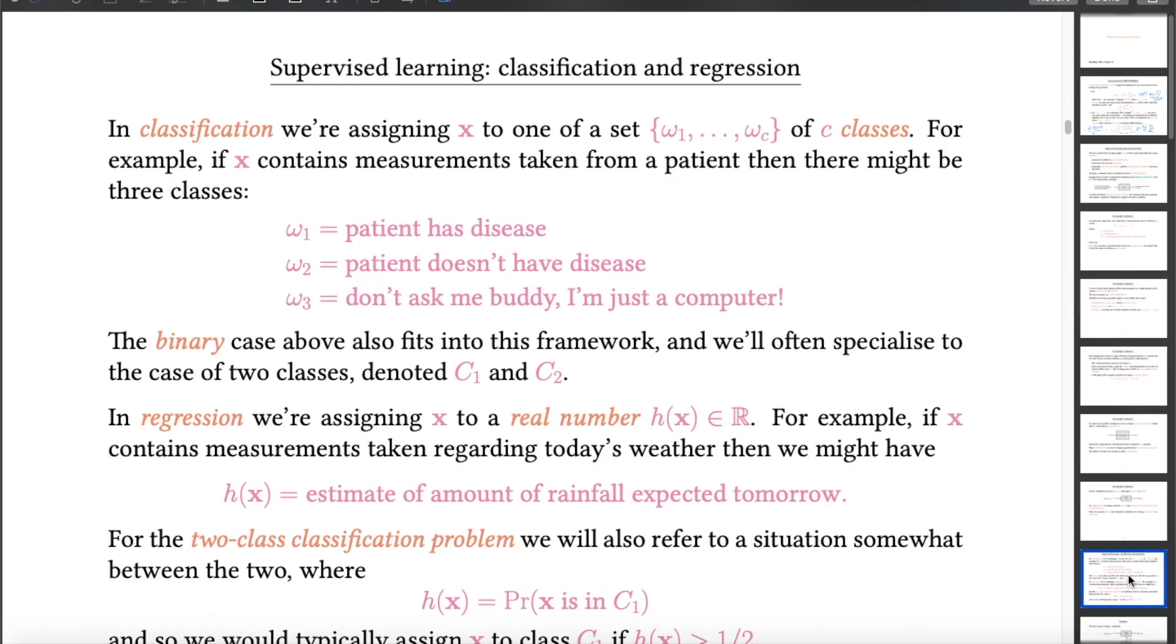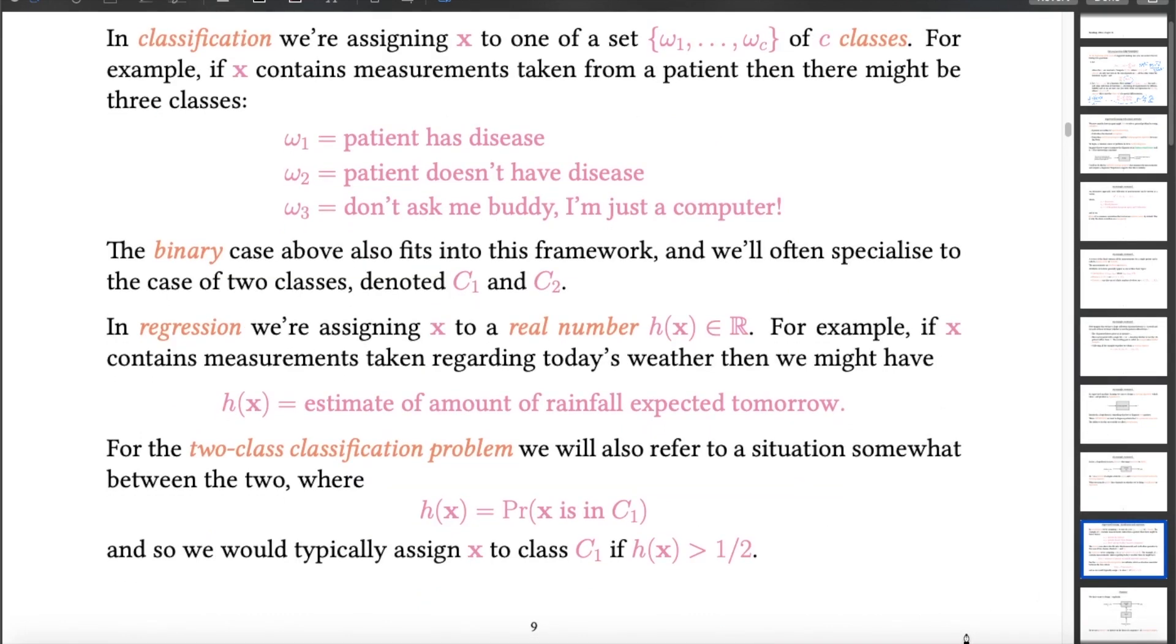The other typical kind of supervised learning we have is regression, where instead of assigning a class to a feature vector we assign a real number. This would be appropriate if, for example, we are trying to learn to predict how much rainfall there would be tomorrow. There's a third possibility, which is somewhat between the first two. In some cases we want a real valued output from our hypothesis that denotes the probability of being in one class or another. In that case we might, for example, assign a feature vector to one class if the hypothesis gives us a value greater than a half. But in this case the hypothesis output would be constrained to be a number between 0 and 1. And we then, for example, might think about looking at how close to a half it is in order to decide whether or not we're sufficiently confident in the prediction that we're going to make.